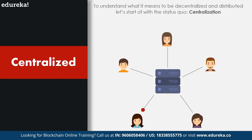Whether you want to order food from a delivery and logistics system like Zomato, or you want to book a cab through Uber, you're basically going through a third party. This third party has complete power over the rules and regulations of the system.